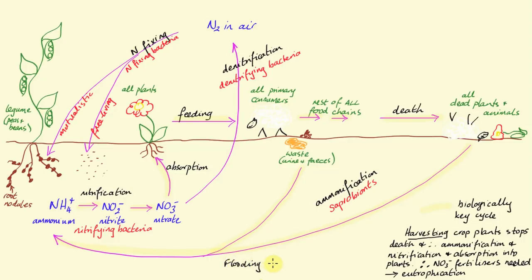Denitrification only occurs where flooding or lack of aeration occurs in the soil, and that's because denitrifying bacteria are anaerobic and denitrification reduces the amount of nitrate in the soil. Reducing the amount of nitrate in the soil is agriculturally really important because it means that plants can't grow.